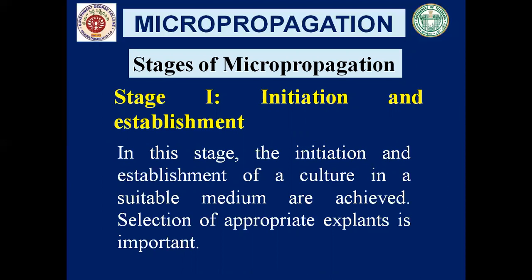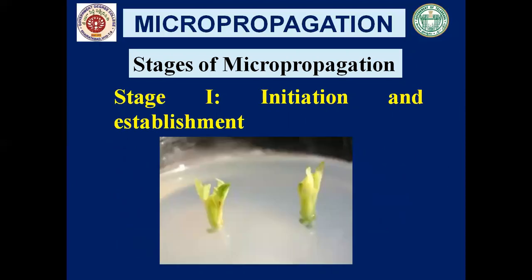Stage 1 is initiation and establishment. In this stage, initiation and establishment of a culture in a suitable medium are achieved. Selection of appropriate explants is important. The chosen explant is to be surface sterilized. Surface sterilization is done using different chemicals: teapol, alcohol, 0.1% mercury chloride, 0.5% sodium hypochlorite, or calcium hypochlorite. Proper washing and surface sterilization of the explant is very important.